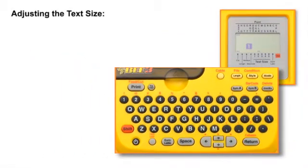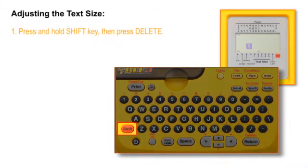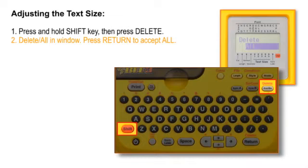Here is a summary of how to adjust the text size. With the B3 turned on, press and hold the SHIFT key, then press the DELETE key. DELETE ALL appears in the window. Press RETURN to accept ALL. This clears the B3's settings.